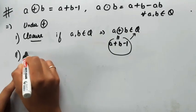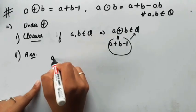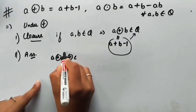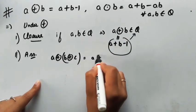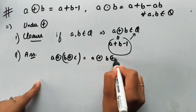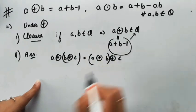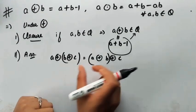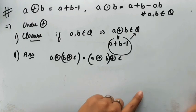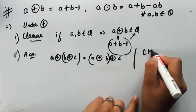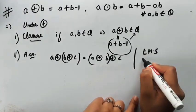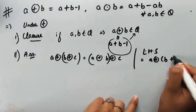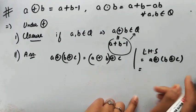Since a and b are rational numbers, a+b-1 is also rational, so closure is proved. Similarly, the associative property also holds. To prove associativity we show that (a⊕b)⊕c = a⊕(b⊕c). Let's consider the left-hand side: what is (a⊕b)⊕c?